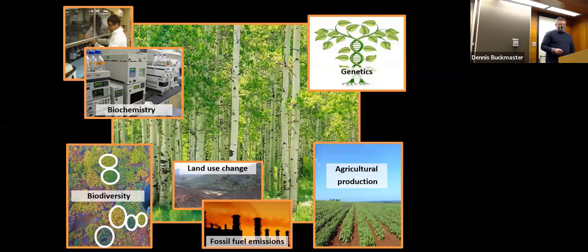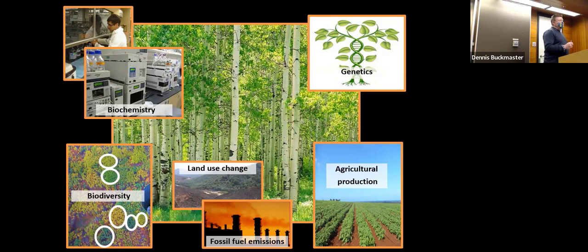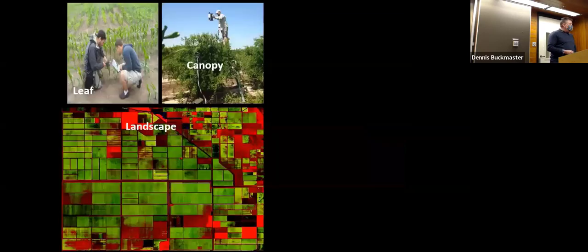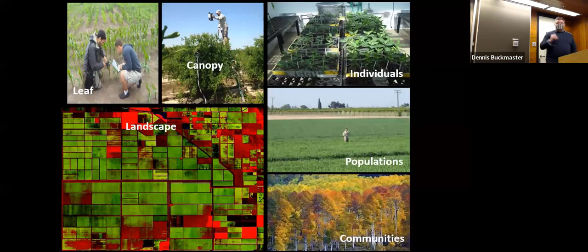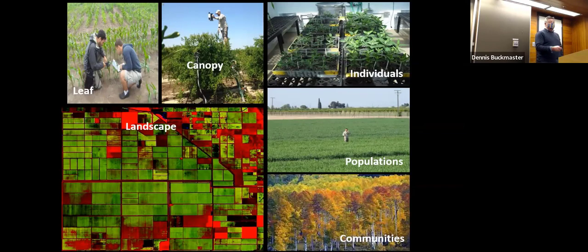We're at a very interesting time in plant biology and plant ecology. We've never had as much access to high-resolution information about chemistry and plant genetics, but we've never needed it more. We're confronted with challenges: losses in biodiversity, changes in land use, anthropogenic influences on atmospheric composition, and the need to balance saving the environment with doubling agricultural production to meet the growing population.